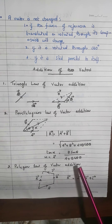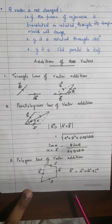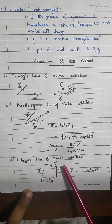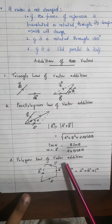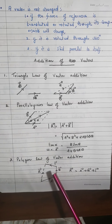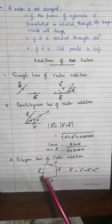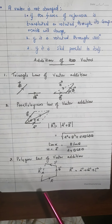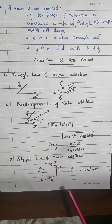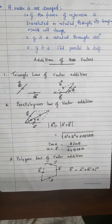The polygon law of vector addition: all vectors should be expressed as the sides of a polygon in one order. Then the resultant is given by the closing side in reverse order. The resultant can be represented as vector A + vector B + vector C.